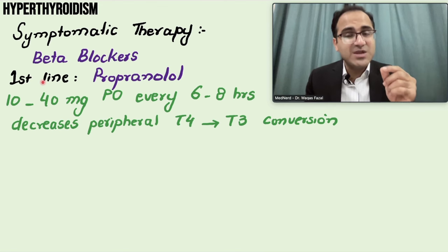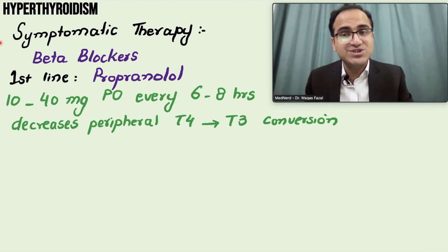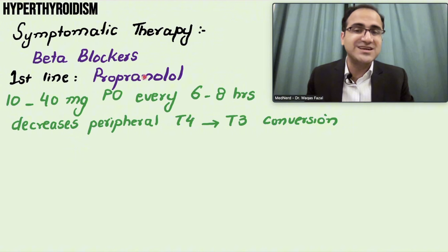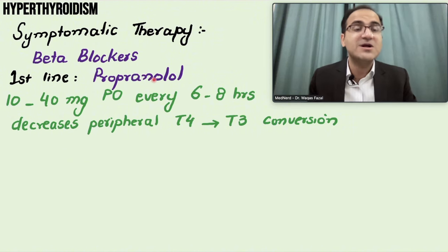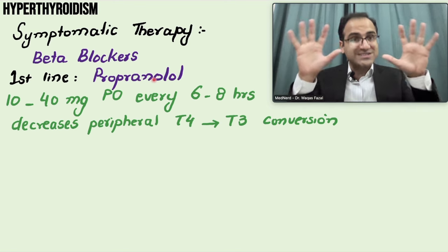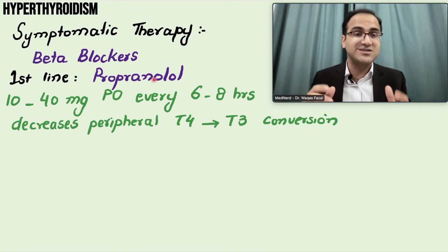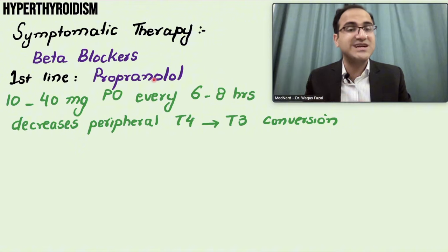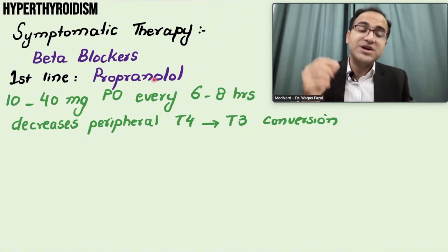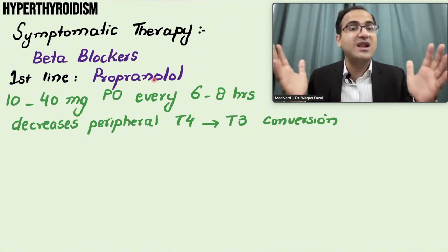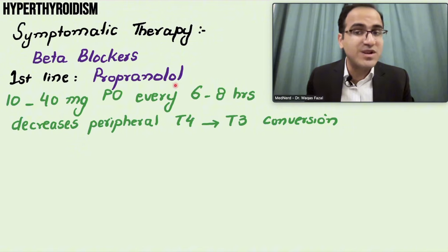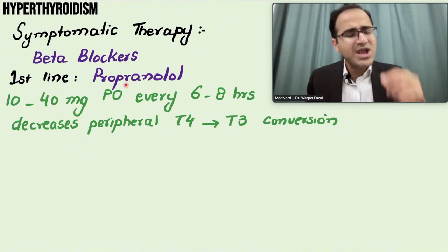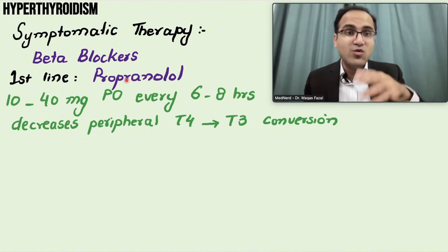The main drug of choice for symptomatic therapy is beta blockers, and the first-line drug is propranolol. Propranolol is a beta blocker that blocks the sympathetic overdrive in hyperthyroidism. It blocks beta-1 receptors and reduces heart rate, and also acts on beta-2 to reduce peripheral effects of sympathetic overactivation. The dose is 10 to 40 mg orally every 6 to 8 hours.